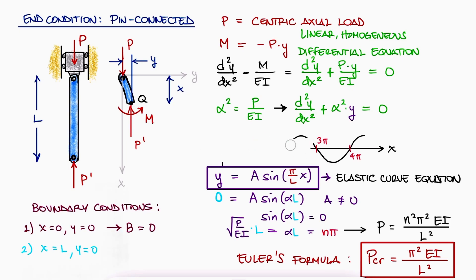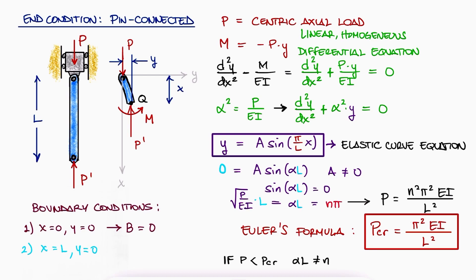If the external load P is less than P critical, sin(alpha L) would not be able to be zero, which means that A has to be zero, and therefore the column would not be buckled. Therefore, if P is less than P critical, no buckling happens.